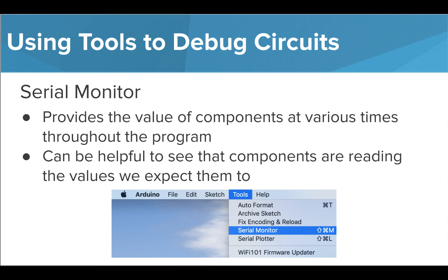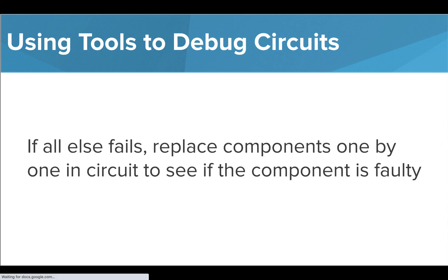For example, if you are using a distance sensor and you expect it to be reading the distance of an object 10 inches away, and it is constantly providing a value of 0 in the serial monitor, this can signal that something is wrong with this sensor — either in its connection, its programming, or the sensor itself. If all else fails, a good way to check if you have a faulty device is to replace the one you're using with another. Now, it's your turn to practice using debugging with physical circuits.